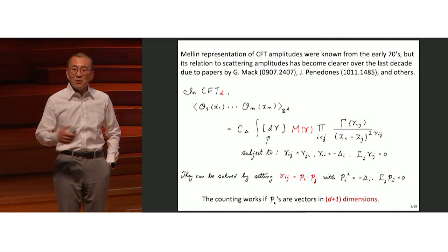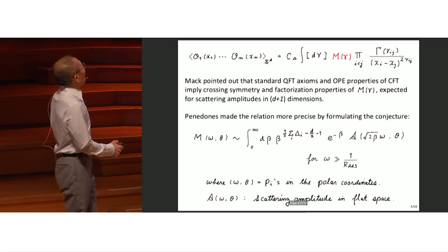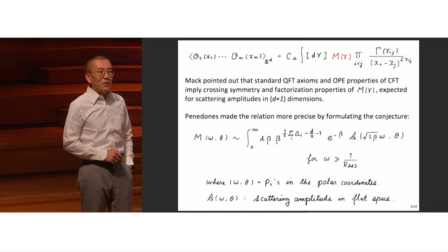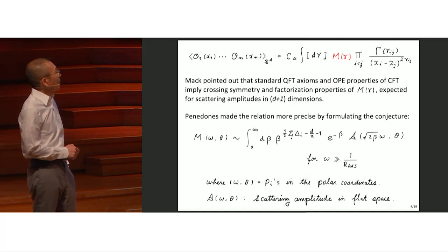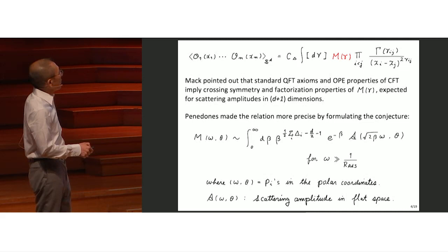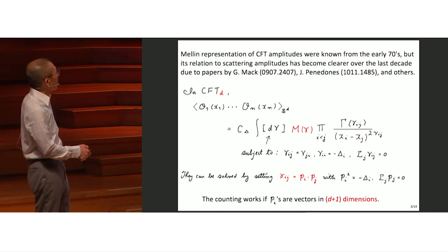We started with conformal field theory in D dimensions, so what is momentum in D plus one dimensions doing here? Holography. Penedones, following Mack, pointed out that if you write it in this way, M satisfies properties as if it is an S-matrix of a certain field theory. Penedones made that correspondence more precise by conjecturing a relation between the flat space amplitude and the Mellin amplitude in the context of ADS-CFT correspondence.